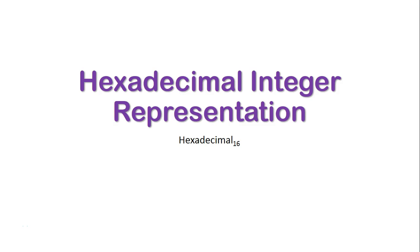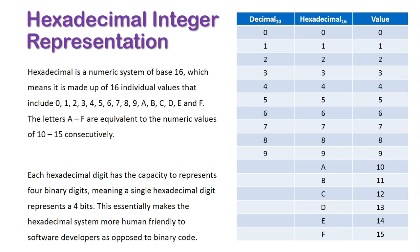We're now going to take a look at hexadecimal integer representation. Now hexadecimal is a numeric system of base 16, which means it's made up of 16 individual values that include 0.